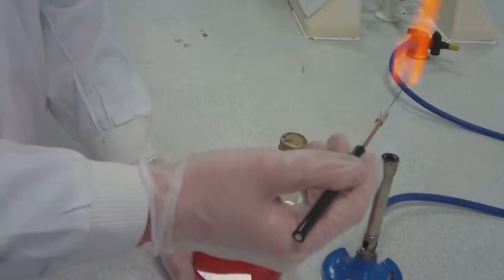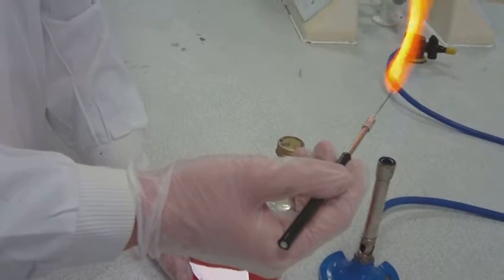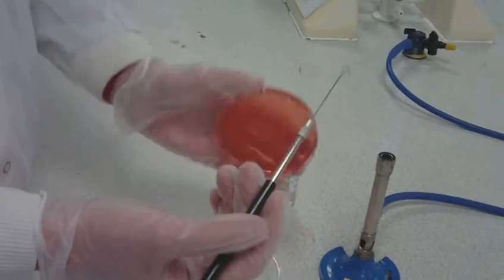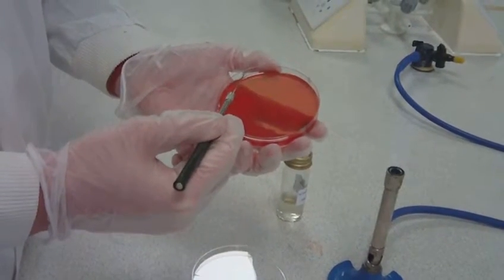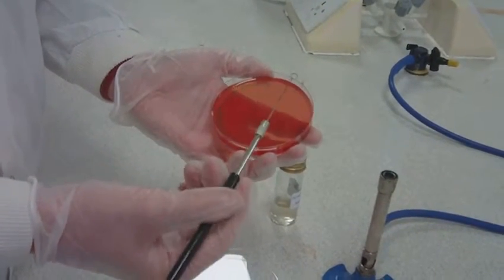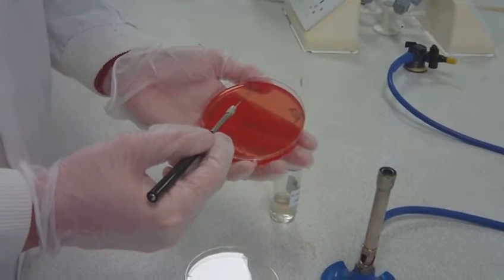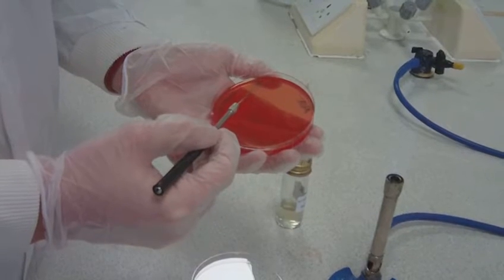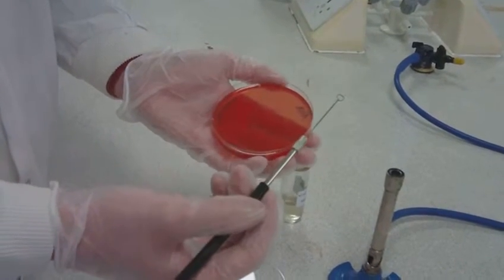Re-flame the loop and let it cool for 5 seconds by touching it to an unused part of the agar surface close to the edge of the plate. Use the loop to streak the bacteria across one quarter of the agar from the circle you just did in 3 to 4 lines going from 12 to 3 o'clock.